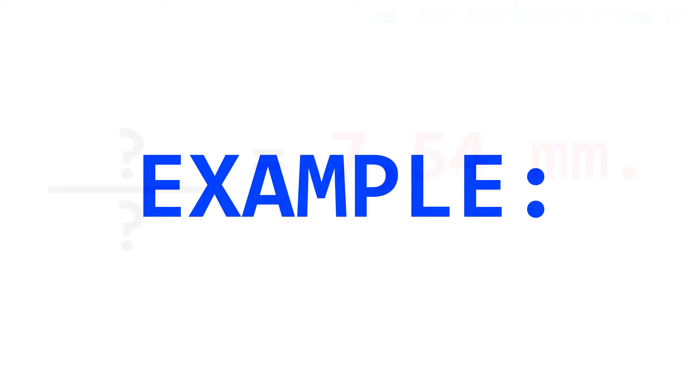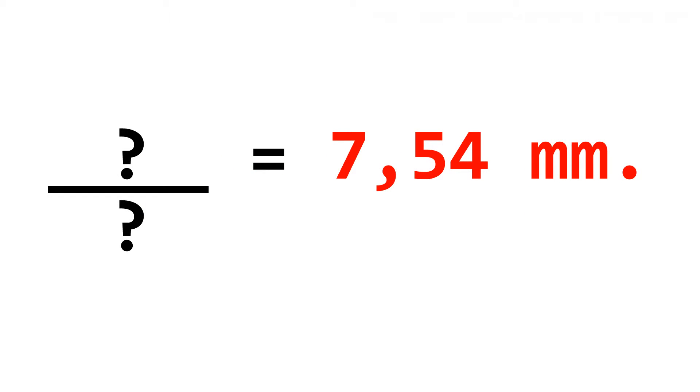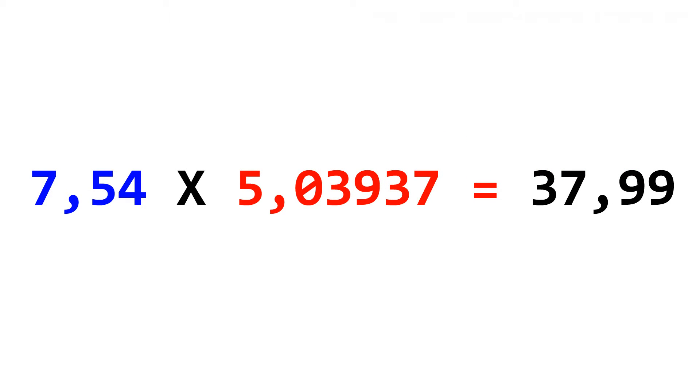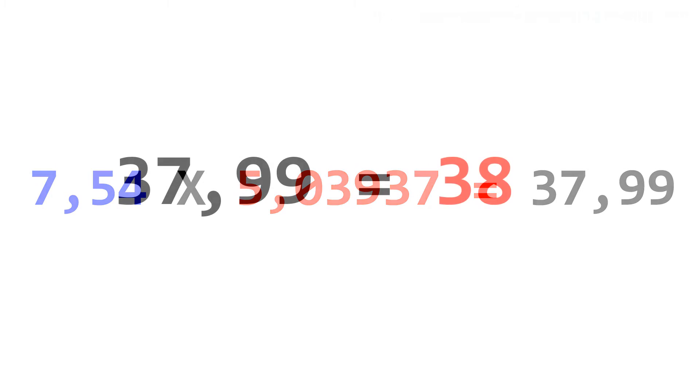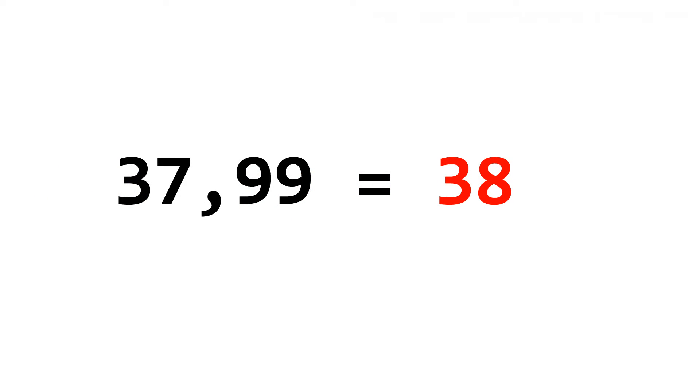What do you think if we do another example? What fraction equals 7.54 millimeters? 7.54 multiplied by 5.03937 equals 37.99, which is closer to 38. Then this number is the numerator of the new fraction. The denominator is 128. The fraction is 38/128 of an inch. Now simplifying, it is 19/64ths of an inch.